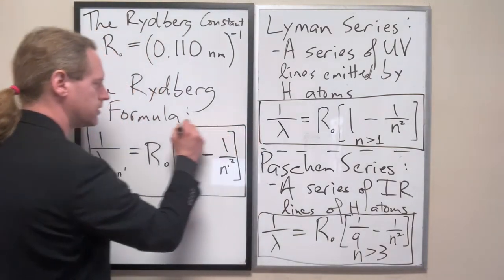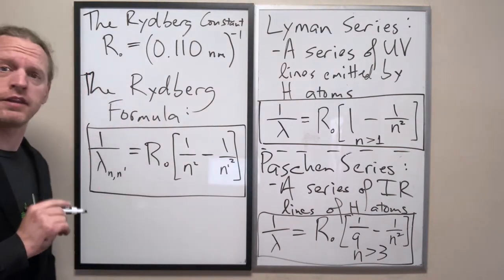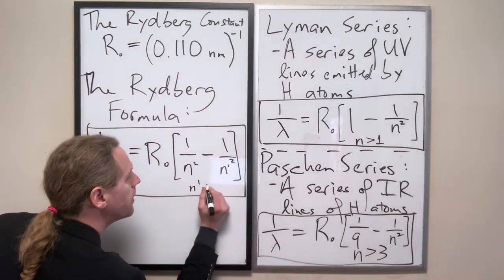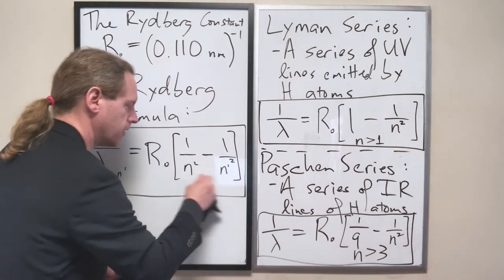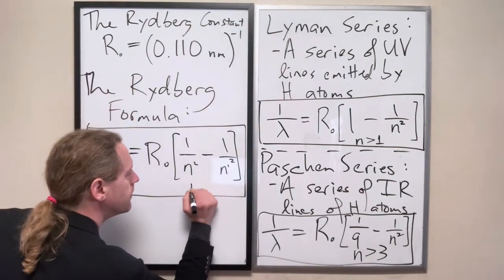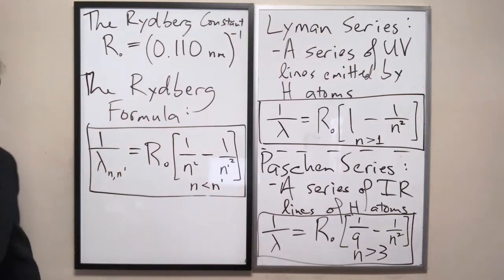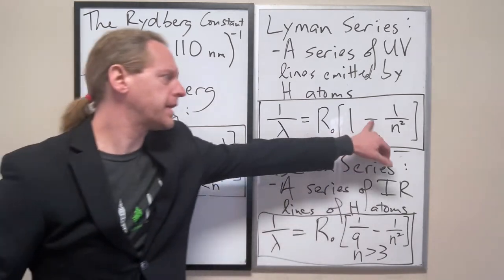Now to be clear though, this only works when you have n prime exclusively - actually I'll write it this way - when you have n less than n prime.